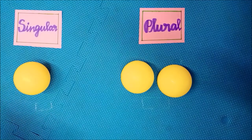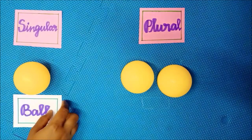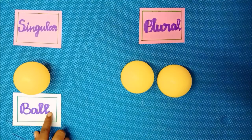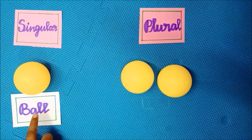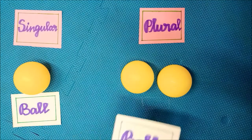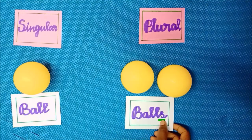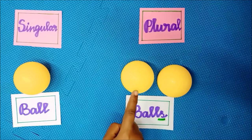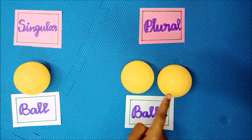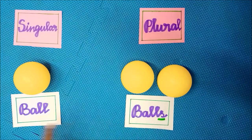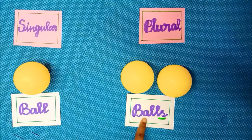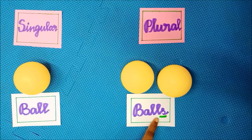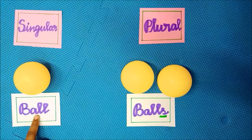Look at the next picture. It is a ball — only one ball, so it is singular. Here I have two balls. So the plural form of ball is balls, B-A-L-L-S.